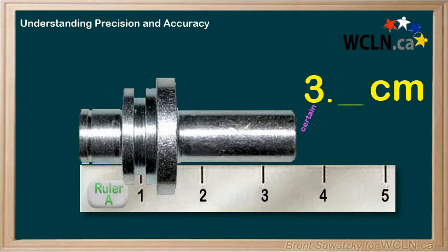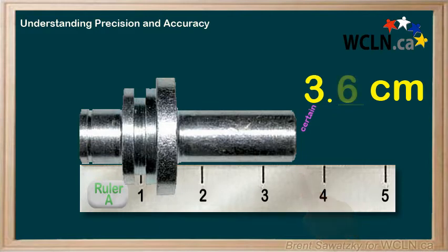Should we add another digit to our measurement? Well, let's try — but we have to guess a little bit. It's a tiny bit more than halfway between, so let's guess that our new digit is a six. We acknowledge that we had to guess on this digit; it's not certain, it's an uncertain digit. We guess a six, but it could have been a five, maybe a seven. It's an educated guess.